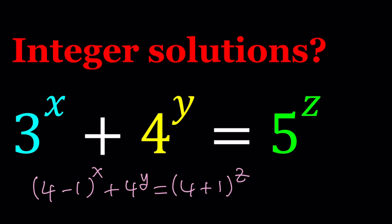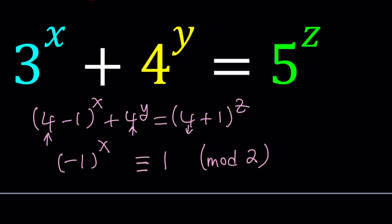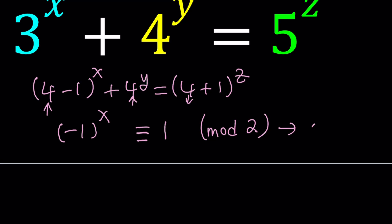My goal is to take a look at this expression using modular arithmetic, using remainders. If you look at this expression mod 2 — which means you're only considering the remainders upon division by 2 — 4 is 0 mod 2, so that's going to disappear. We end up with negative 1 to the power x. The 4 to the y term also disappears, and we get 1 to the power z, which is 1. This is all in mod 2. So if an equation is true in general, it should also be true in any mod.